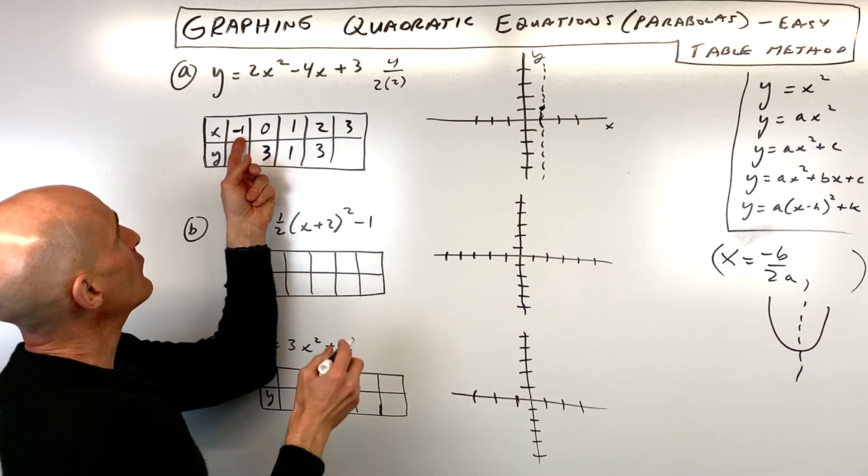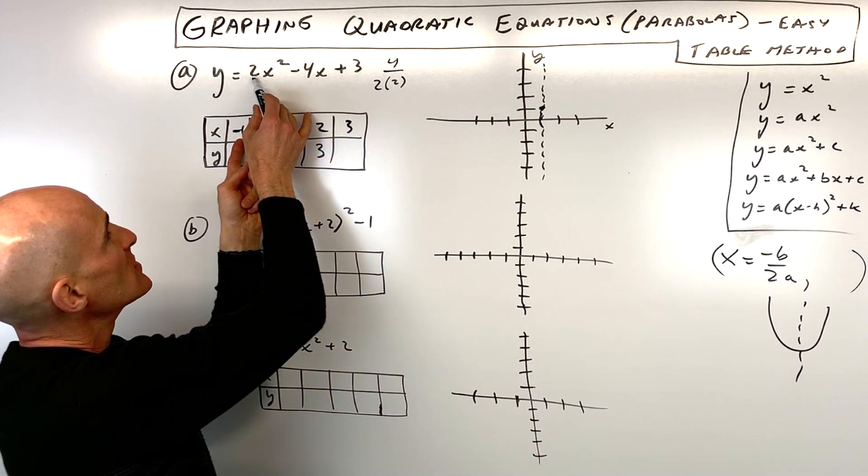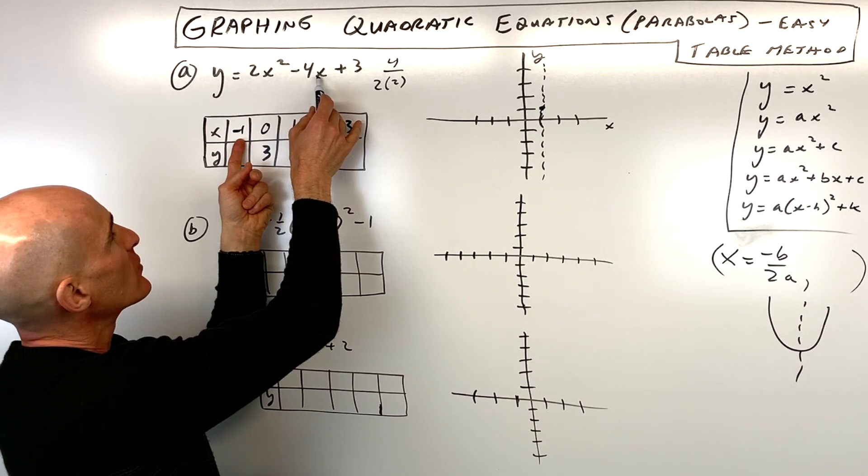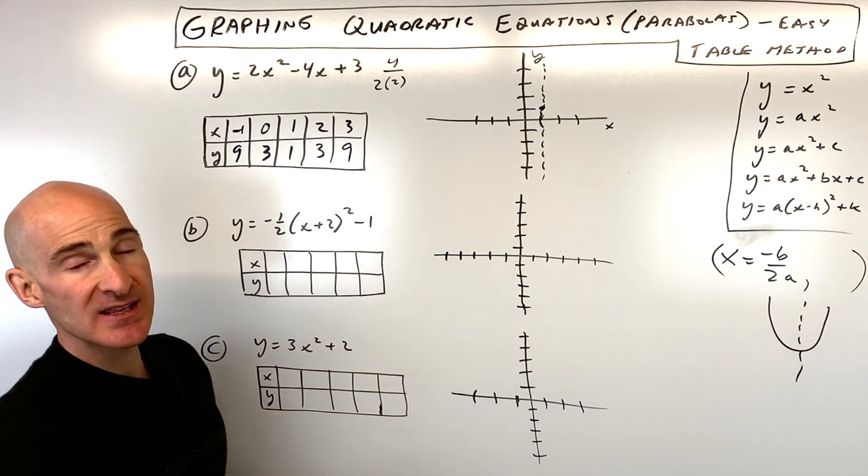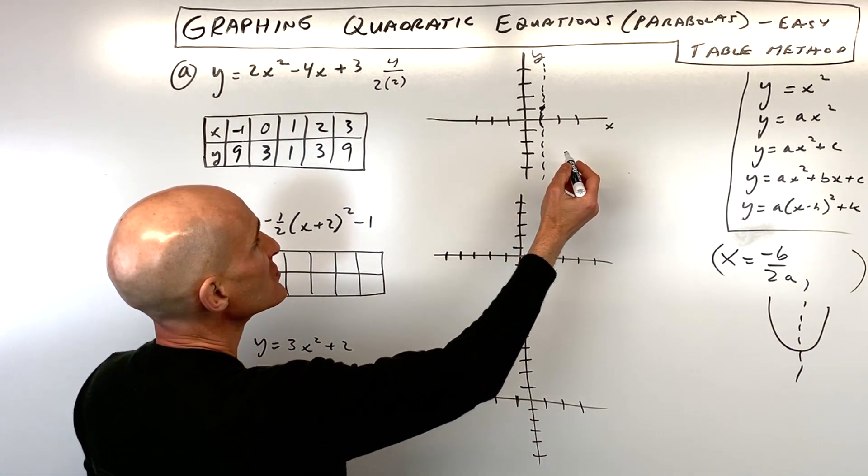Say I put in a negative 1. That's going to be negative 1 squared is 1, times 2 is 2. Negative 4 times negative 1 is positive 4. So that's going to be 6, plus 3 is 9. And this is also going to be 9, because it's the same on both sides. So let's go ahead and plot those now.